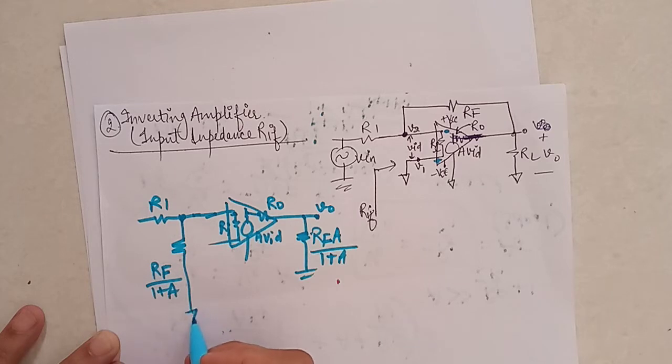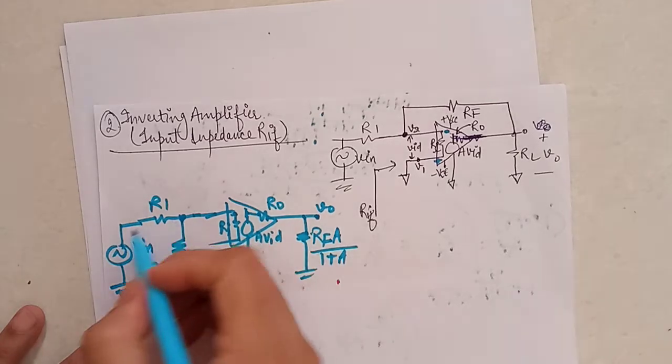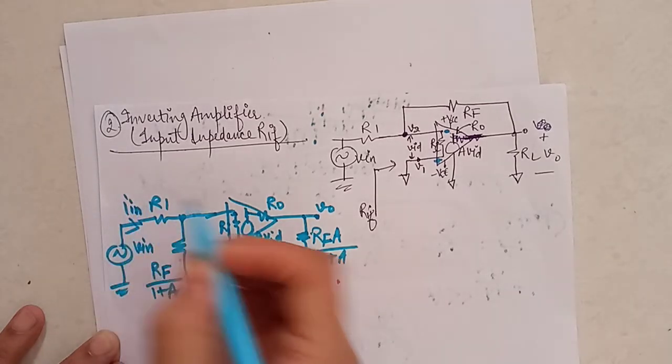Here this is grounded, this is V input supply, this is I in current point, this is your source voltage, the voltage is VID.